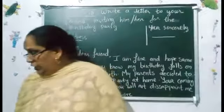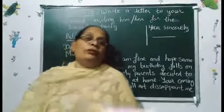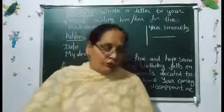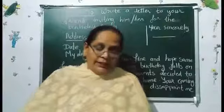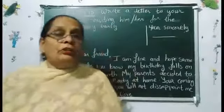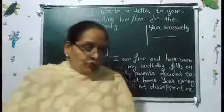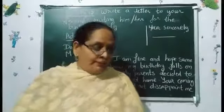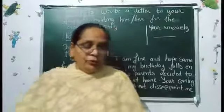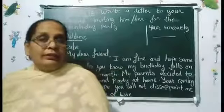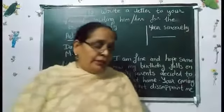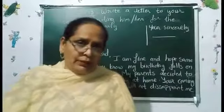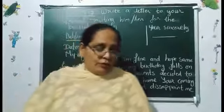Activity 13 is a true and false exercise. The sentences are from the lesson. First: 'The boy loves the tree' — True. Second: 'The tree liked the boy to swing from branches' — True. Third: 'The tree became sad whenever the boy came back' — False, the tree was happy.